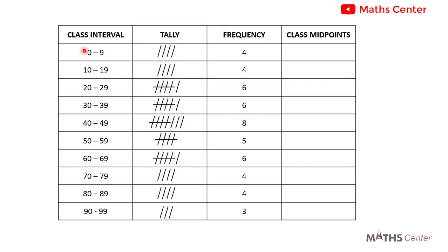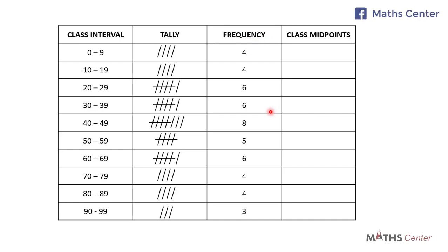Now your frequency distribution table should look like this. We have the class interval, the tally, and the frequencies. For this particular histogram, I'm going to use the class midpoints on the horizontal axis, so I'll bring a new column for the class midpoints.